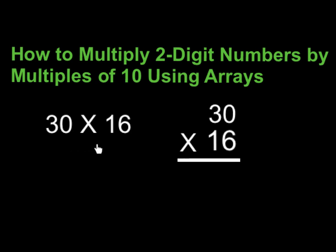You can think of this problem as 30 times 16 written this way, or the standard algorithm way, or the expanded algorithm way. You can write it either way, think of it either way, it doesn't matter. Remember it could also be 16 times 30, we would still get the same answer.